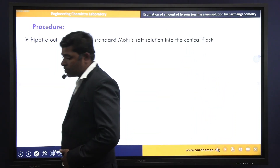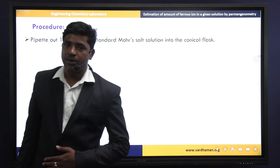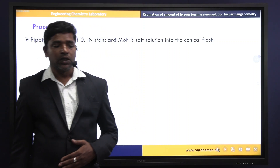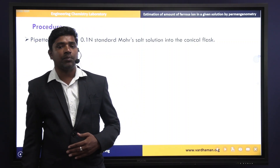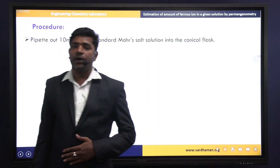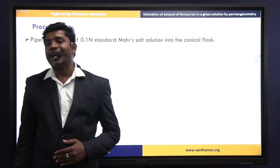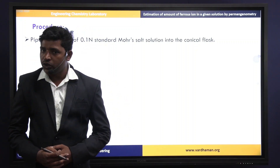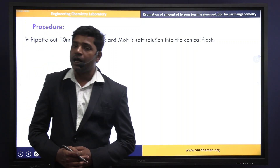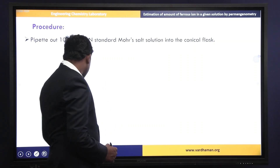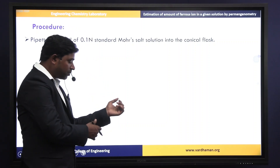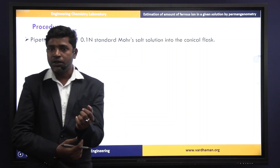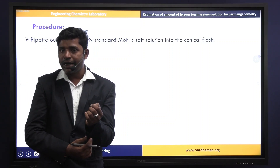Next, the procedure. In this experiment we have two steps. The first step is the standardization of potassium permanganate. Why do we need to standardize potassium permanganate? Because potassium permanganate is a secondary standard solution, meaning it is a substance which is not available in pure form. That is why we need to standardize it by using the titration method.